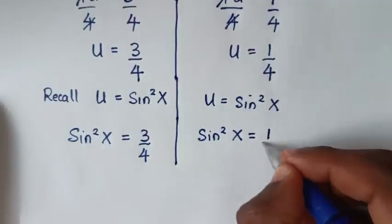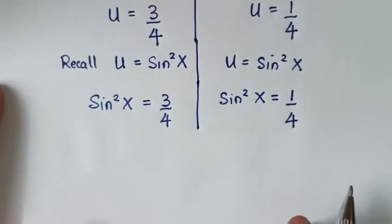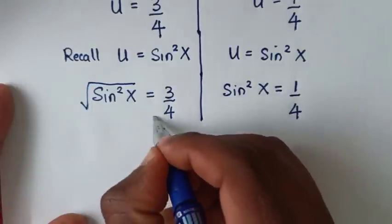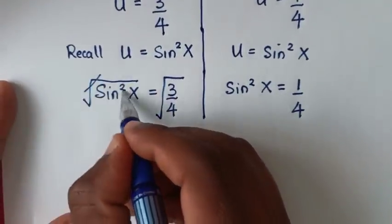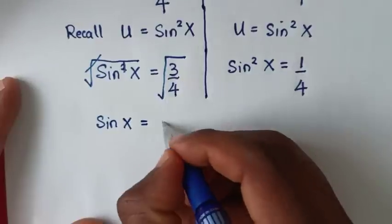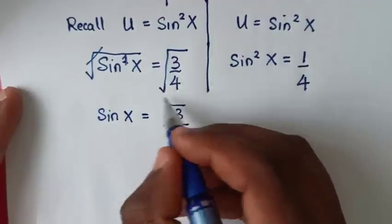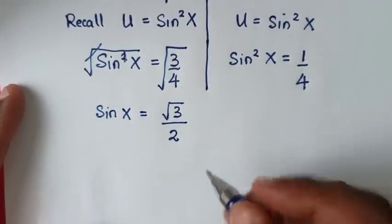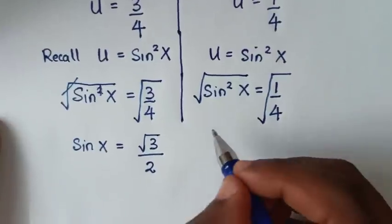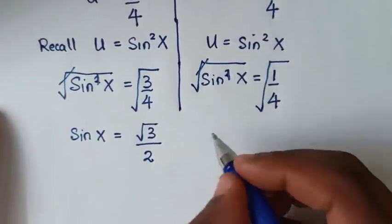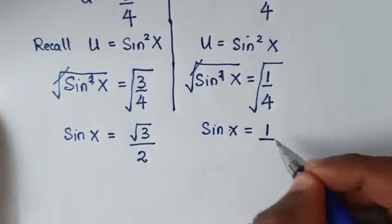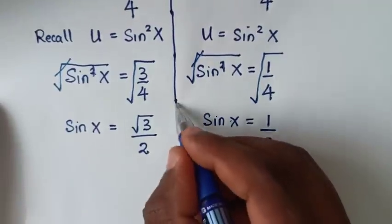In the next step, to remove the squares, we apply the square root on both sides. For the first solution: the square root cancels the square, so sine x equals square root of 3 over square root of 4, which is square root of 3 over 2. For the second solution: sine x equals square root of 1 over square root of 4, which is 1 over 2.